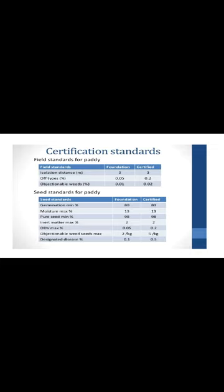The field standards for Paddy include: isolation distance, off-types percent, and objectionable weed seeds — for both foundation and certified seeds. Isolation distance for Paddy: foundation seeds 3 metres, certified seeds also 3 metres. Off-types percent: 0.05% in foundation seeds and 0.02% in certified seeds. Objectionable weed seeds: 0.01 in foundation and 0.02 in certified seeds. These are the field standards for Paddy.